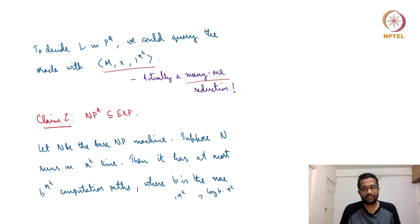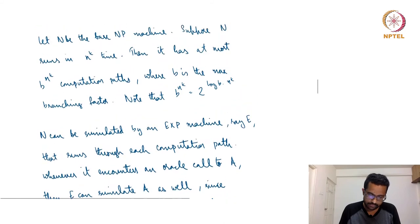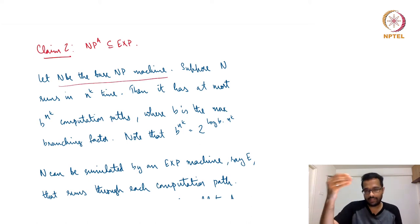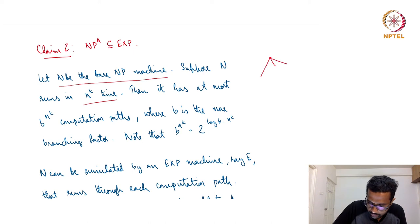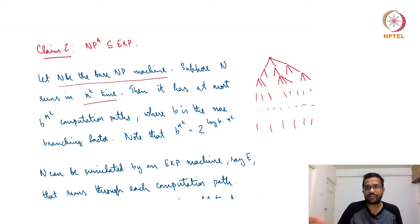The second part is to show that NP^A is contained in EXP. This is slightly more involved. Let N be the NP machine — the base machine is a non-deterministic polynomial-time machine running in time n^k. When you have a non-deterministic machine, there are several possible computation paths. If the max branching factor is b, then there can be at most b^{n^k} computation paths, which equals 2^{(log b) · n^k} — an exponential quantity.